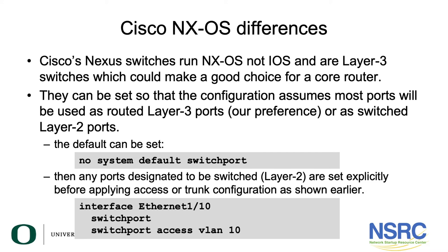Note that setting this system default does not change how the switch operates — what changes is that interfaces come with no switchport by default, assuming you want them as routed ports. If this switch is going to be inside your core where you are routing, this is exactly what you want: no switchport by default.